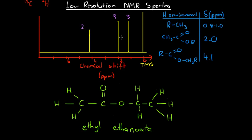If we look over here, we've got a peak at exactly 2.0 with a relative area of 3. We see that this structure here can cause a peak at a chemical shift of 2.0. We look over here — we've got CH₃ bonded to C=O, and then this carbon is bonded to another oxygen and then an alkyl group. These hydrogens here are the same as these hydrogens here, and it's almost certain that these hydrogens caused this peak at a chemical shift of 2.0. Again, looking at the height, that makes sense because the relative height is 3, and we've got 3 hydrogens in this environment.